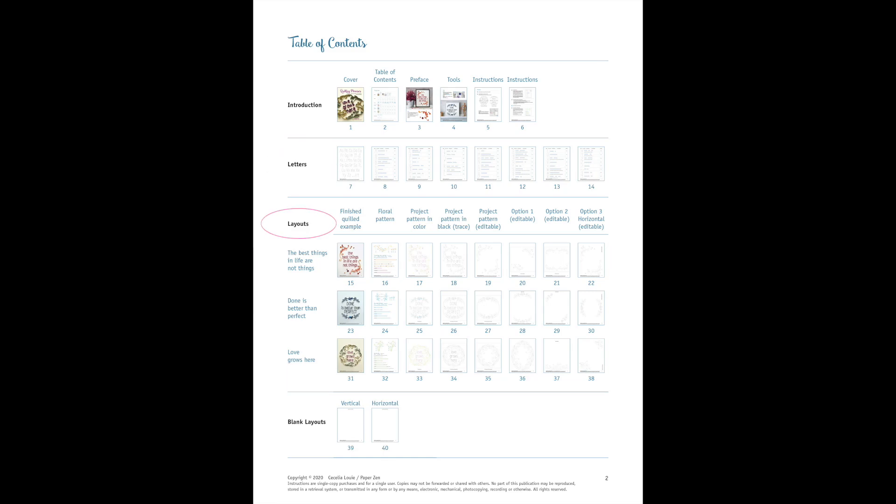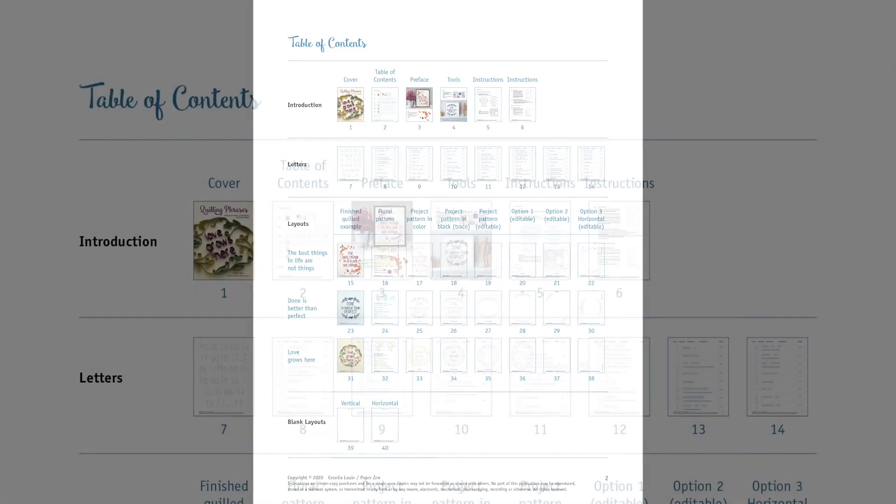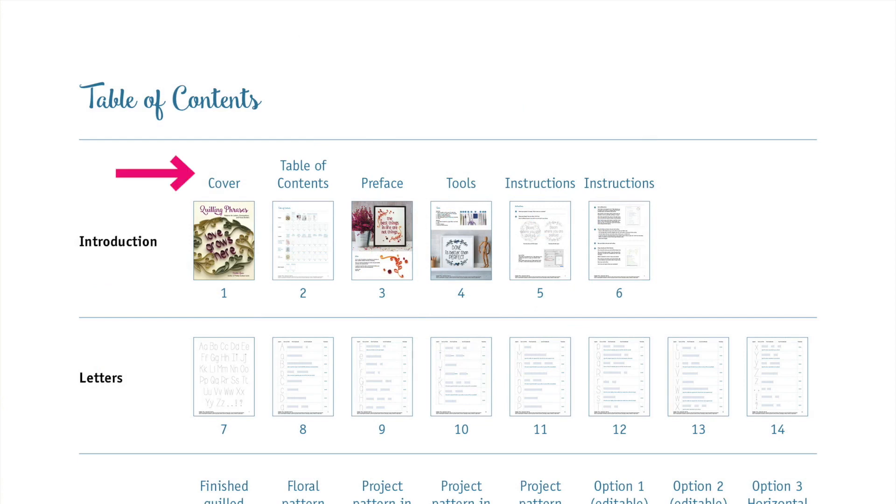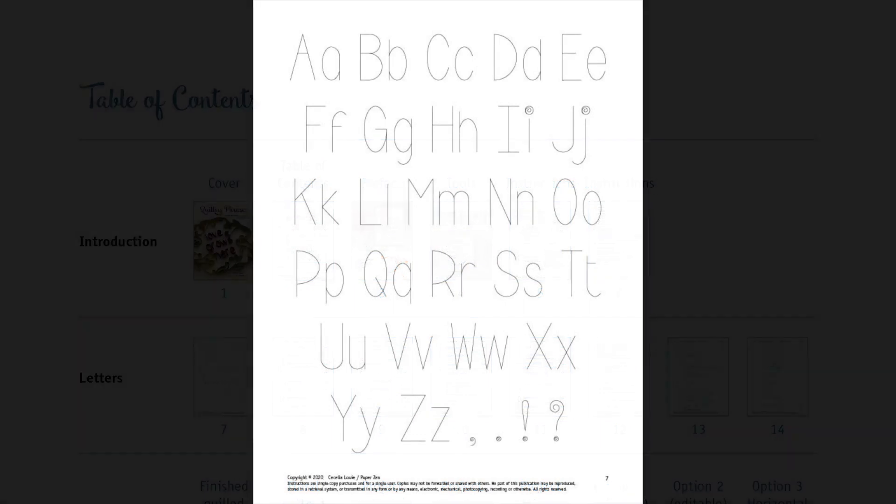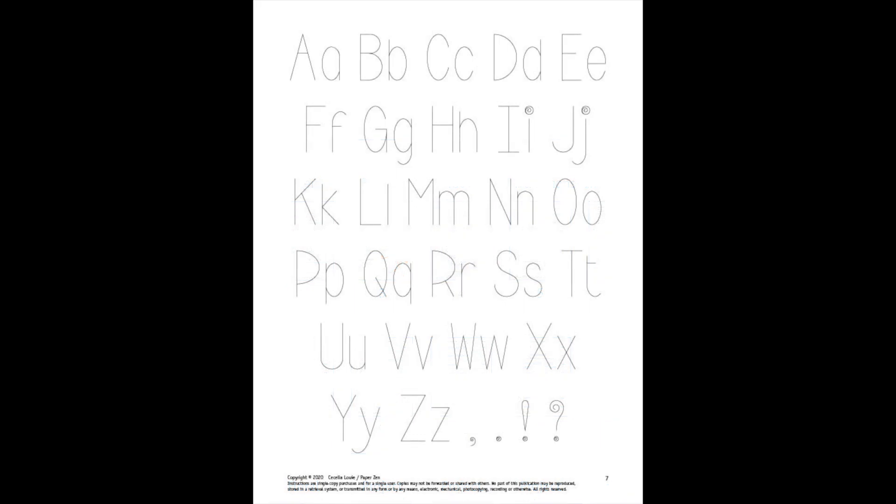The sections are labeled here on the left and they're broken down into the introduction, letters, layouts and blank layouts. Above some of the pages is a description. The first row here is self-explanatory. The next row are all the letters of the alphabet in both upper and lowercase letters and a few punctuation marks.